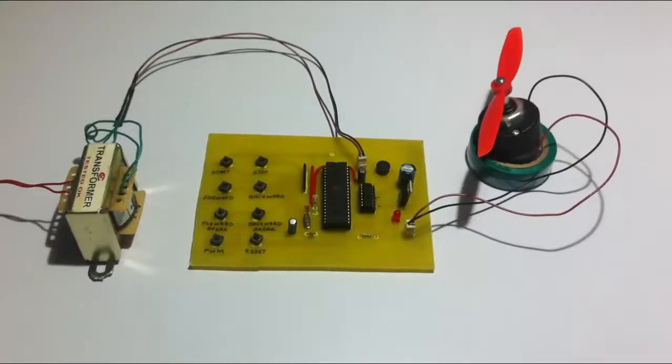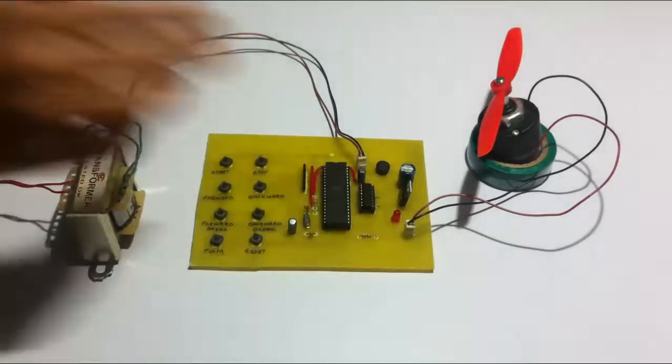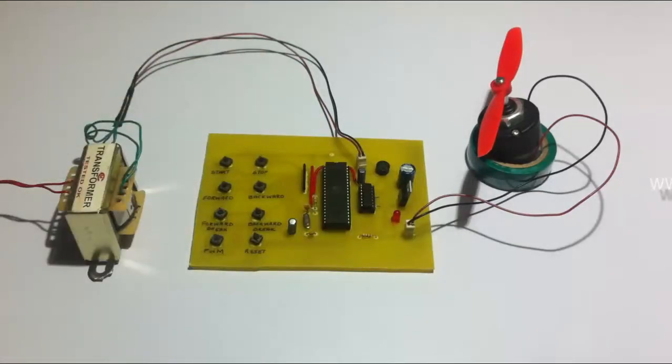Hi, this is a demonstration of the four quadrant DC motor speed control project. As you can see here, we have the project setup. We use a step-down transformer connected to an 8051 family microcontroller.